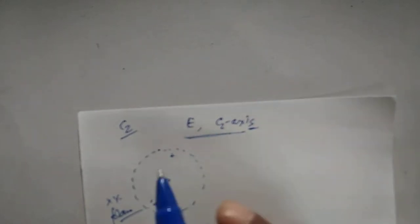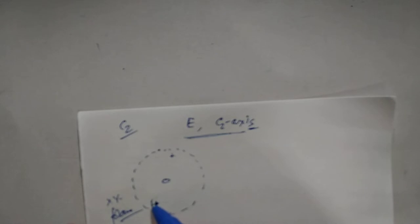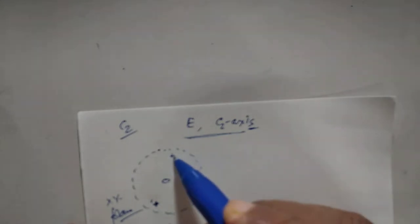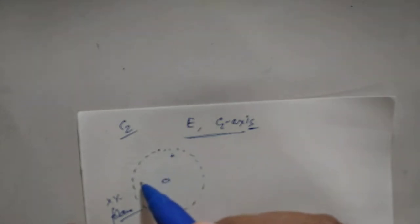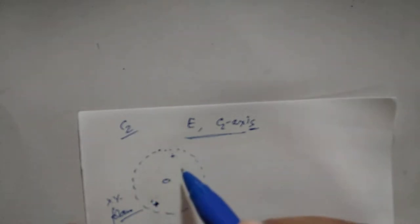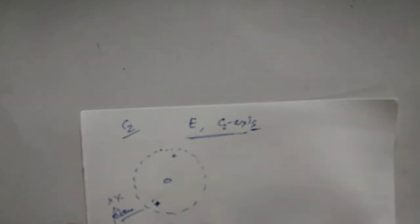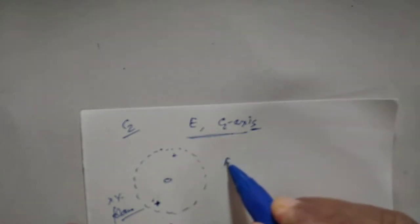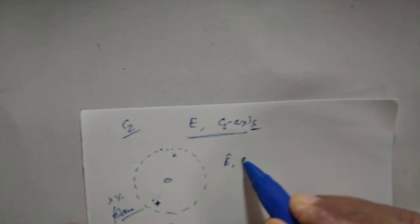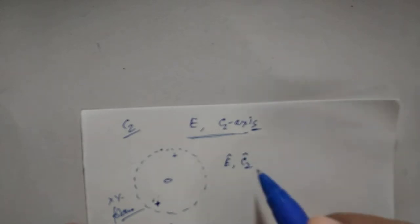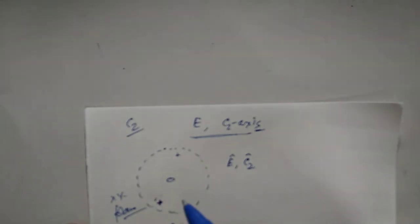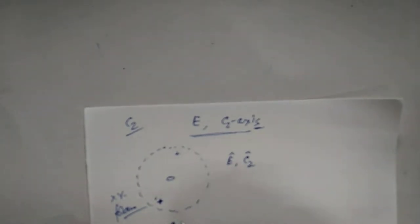No other operation is possible. If we carry out further C2 rotations, the points will keep returning to the same positions. So the operators are identity and C2 about the z-axis, and this is the stereographic projection for the C2 point group.